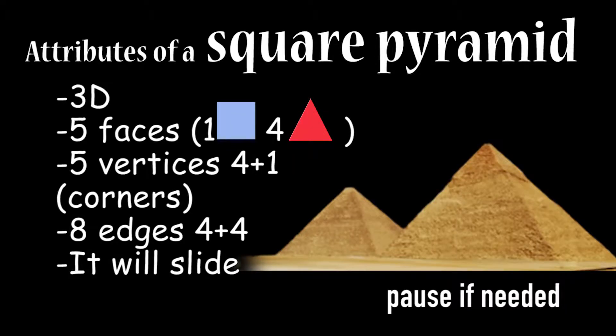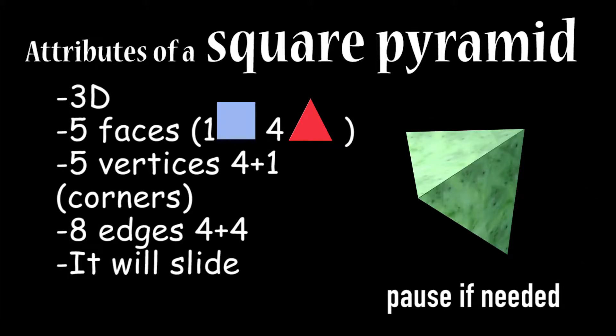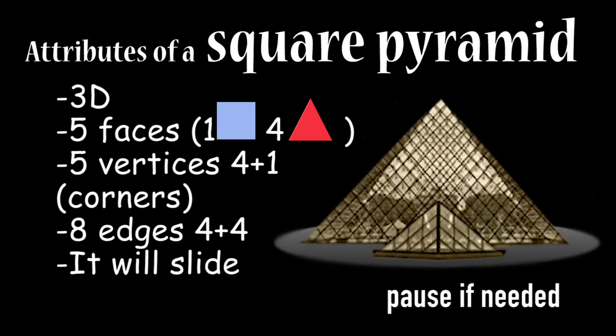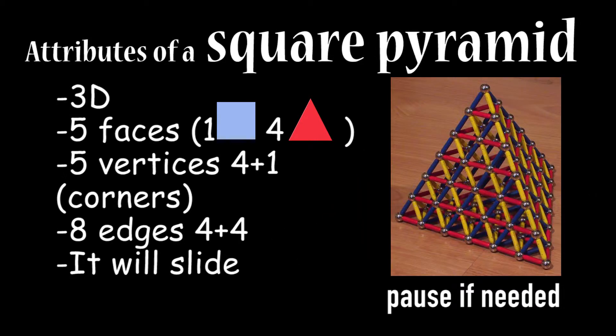Attributes of a square pyramid: it is a 3D shape, it has five faces—one square and four triangles—five vertices, eight edges, and it will slide.